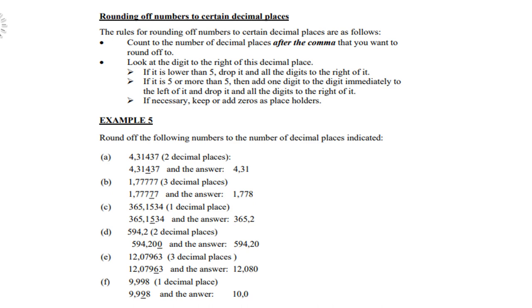Rounding off numbers to a certain decimal place. The rules for rounding off numbers to a certain decimal place are as follows. Count to the number of decimal places after the comma that you want to round off to. Look at the digit to the right of this decimal place. If it is lower than 5, drop it and all the digits to the right of it.